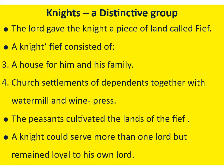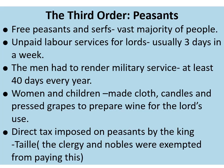A knight's fief consisted of a house for him and his family, church, settlements of dependents, together with a watermill and wine press. The peasants cultivated the land of the fief. A knight could serve more than one lord but remained loyal to his own lord. Free peasants and serfs, the vast majority of people, formed the third order — the peasants.